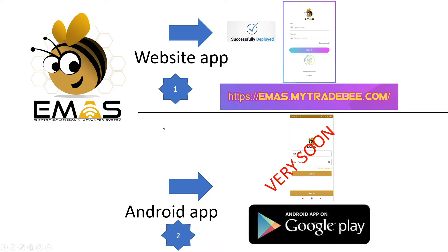The first version was released on the Android platform back in 2019, so it has been more than three years in development. Since 2019 we have been working very hard to improve it, and now we have a website app. We will also soon update our Android app on Google Play, and users other than Android can access e-MASK through our website at emas.mytradebee.com.